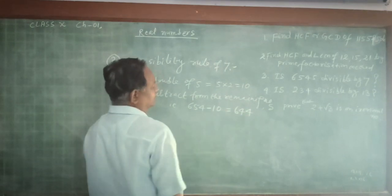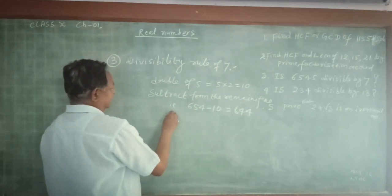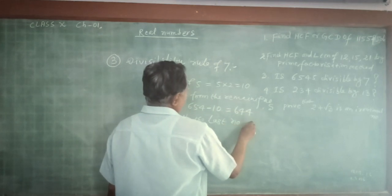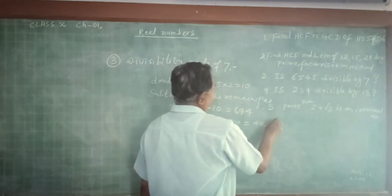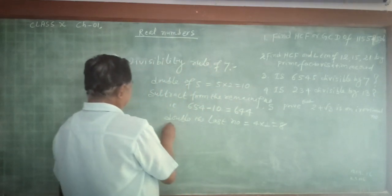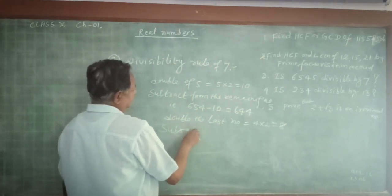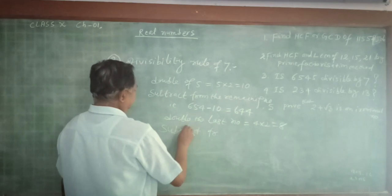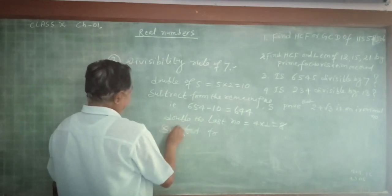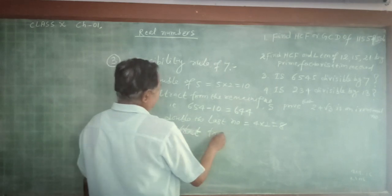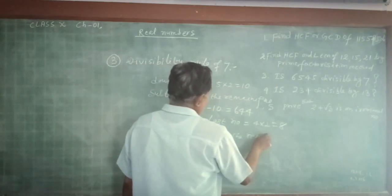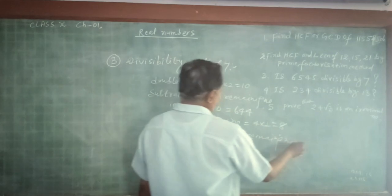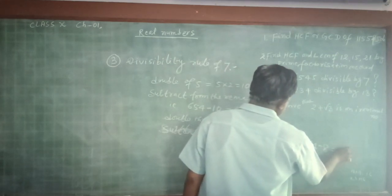So again double the last digit: 4 × 2 = 8. Subtract from the remaining number: 64 minus 8, that is 56.